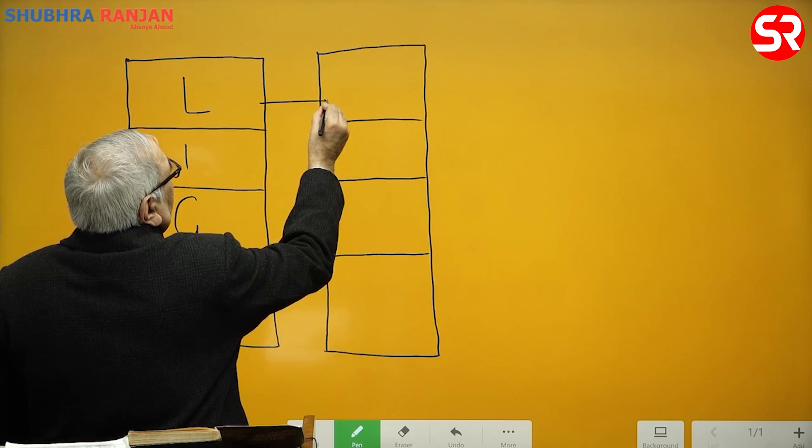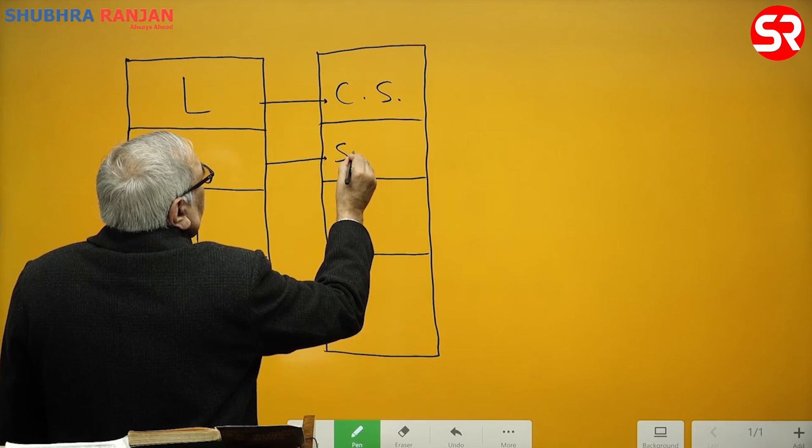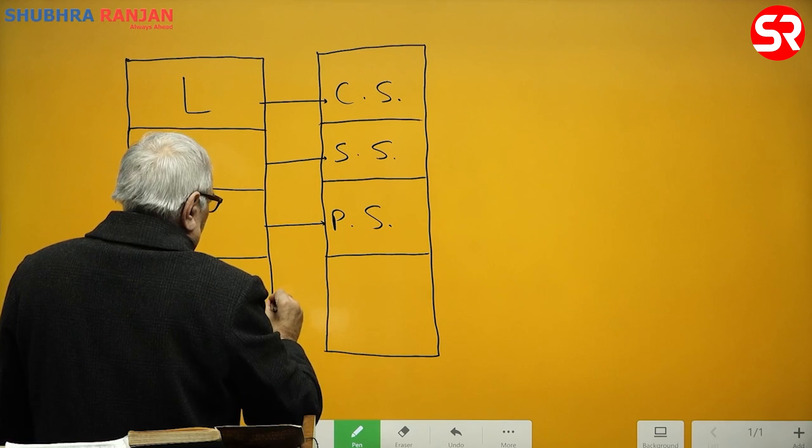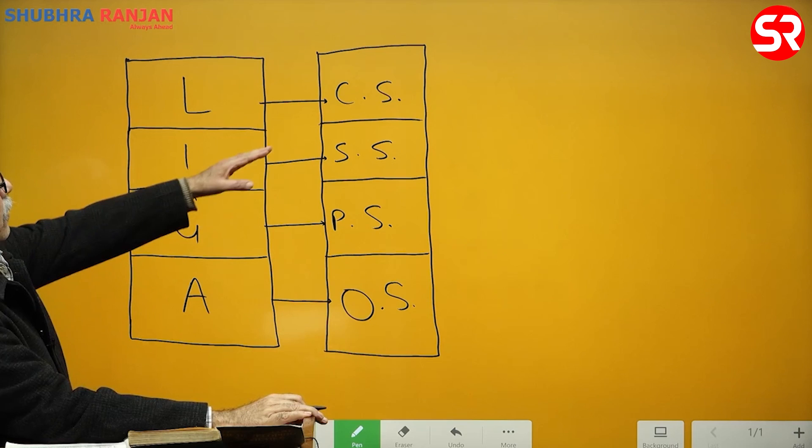This is cultural system, this is social system, this is personality system, and this is organismic system. This is his schematic representation that these are the systems associated with each of these activities.